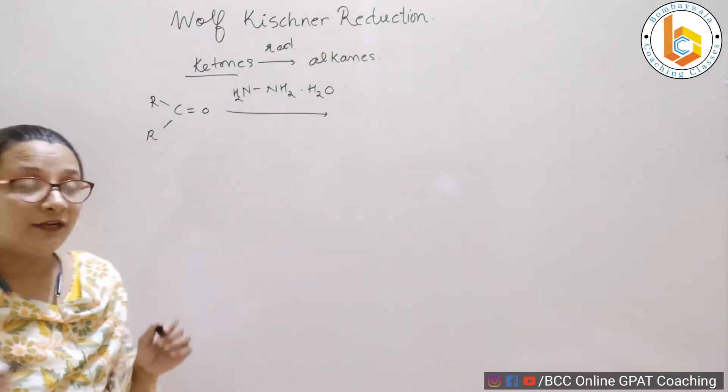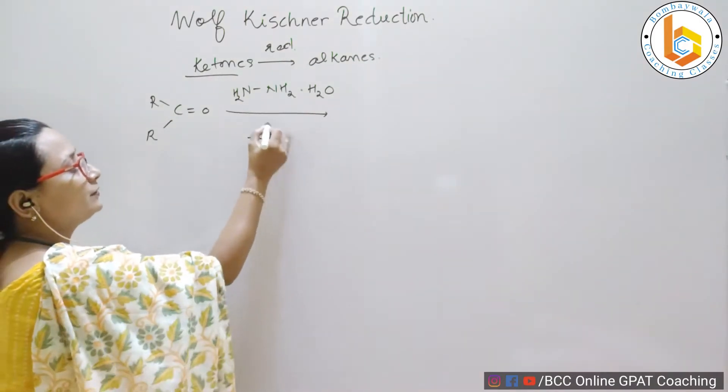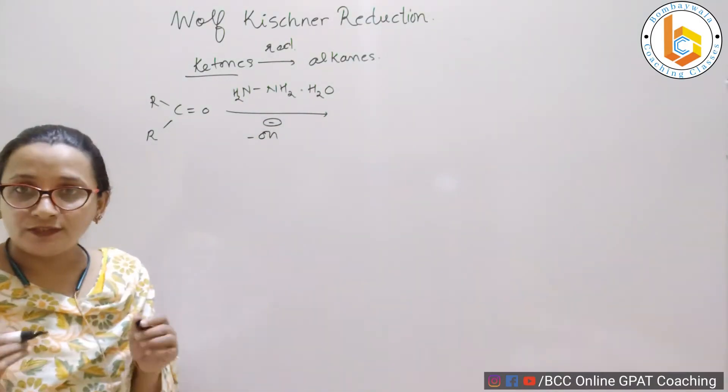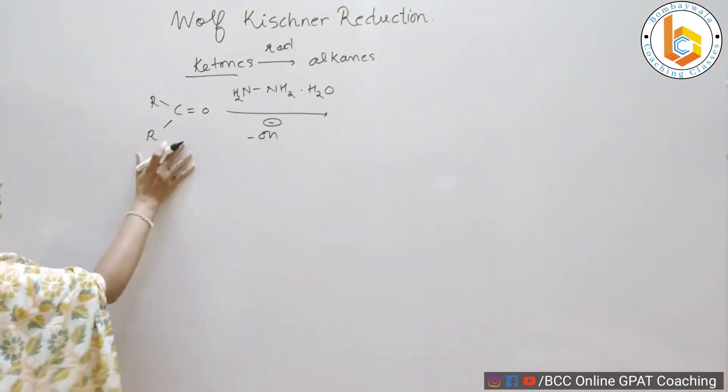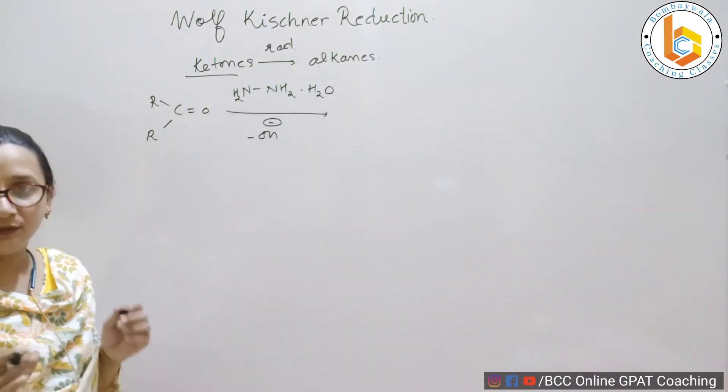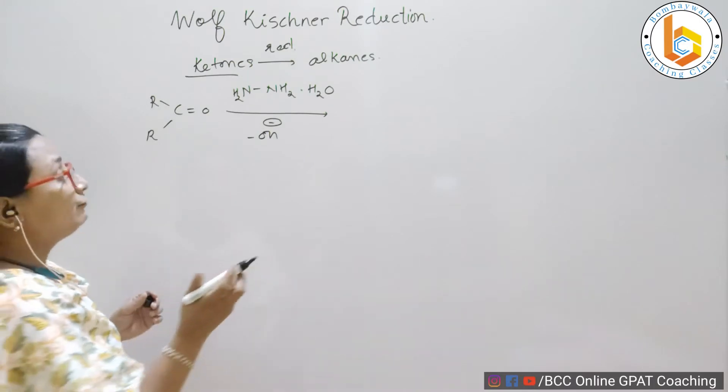In the alkaline conditions, like where there is, for example, NaOH and the reaction vessel, ketone reacts with hydrazine hydrate in the presence of alkaline environment to give you what? To give you nothing but RCH2.